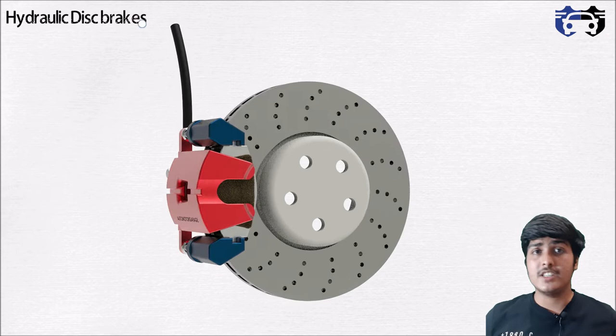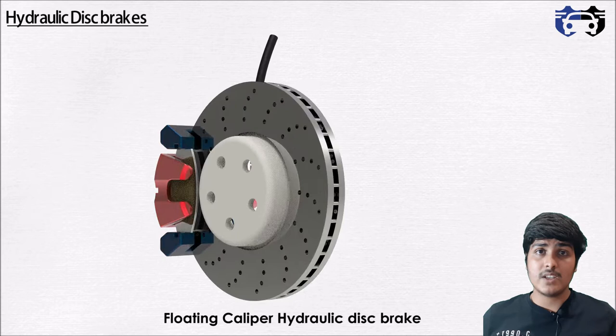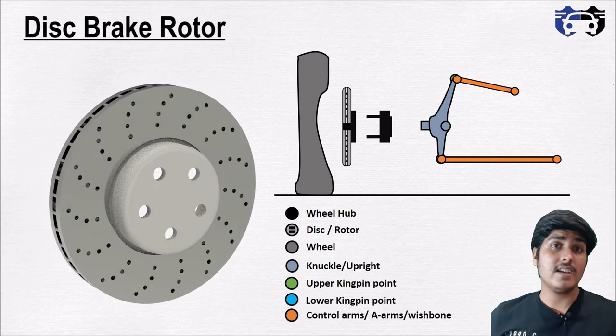Now let's implement Pascal's Law on a hydraulic disc brake and see how they actually work. Here you can see a disc brake assembly. This assembly is called the floating caliper hydraulic disc brake — why it is called a floating caliper will be explained as we move ahead. The disc brake assembly consists of three major components: the disc or rotor, the brake hose, and the brake caliper.